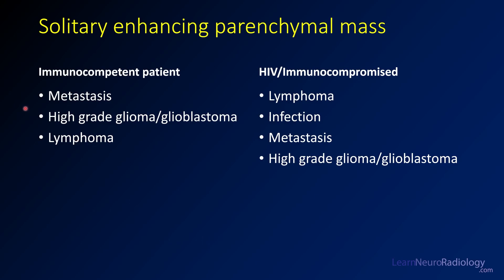In a patient with a normal immune system, you're probably thinking about metastatic disease, high-grade glioma, or lymphoma. If you're looking at an immunocompromised patient, the considerations are similar but in a different order. Lymphoma is much more prevalent in immunocompromised patients, as is infection, so those move to the top of your list. Metastatic disease and glioma are still differential considerations.